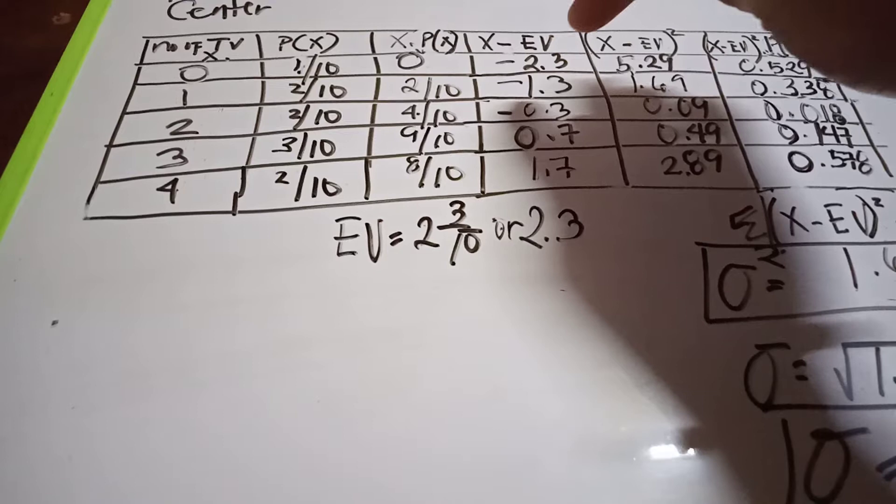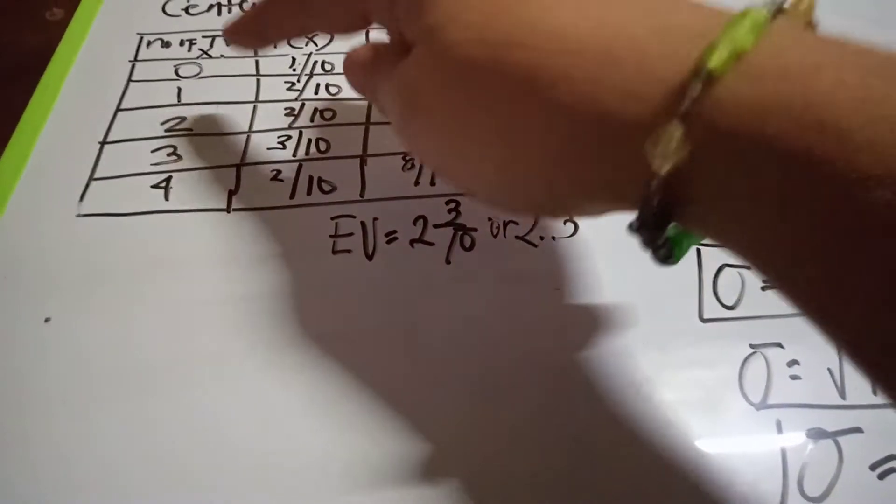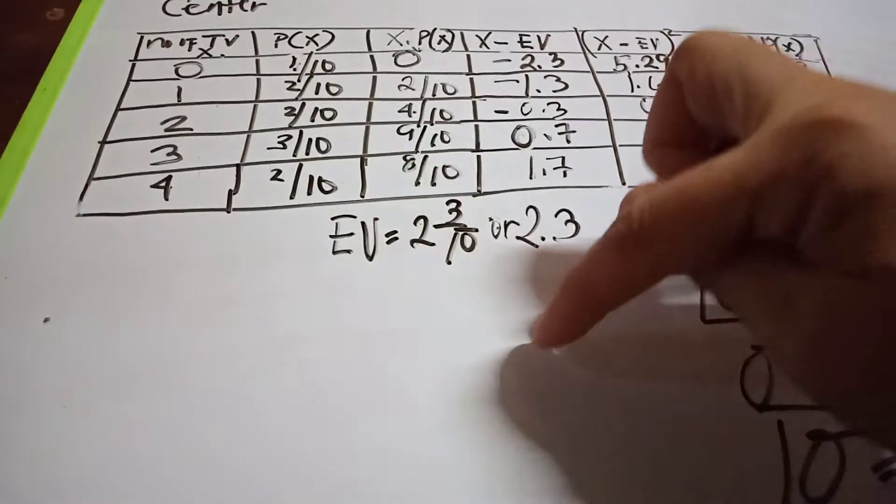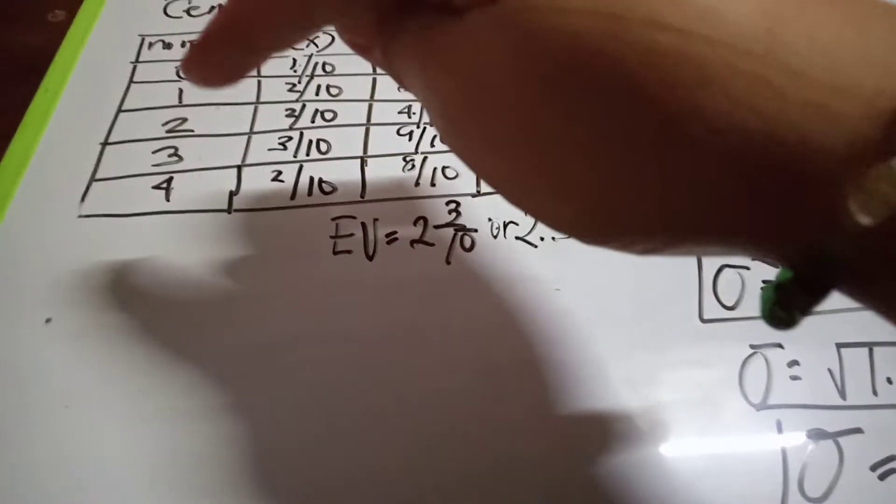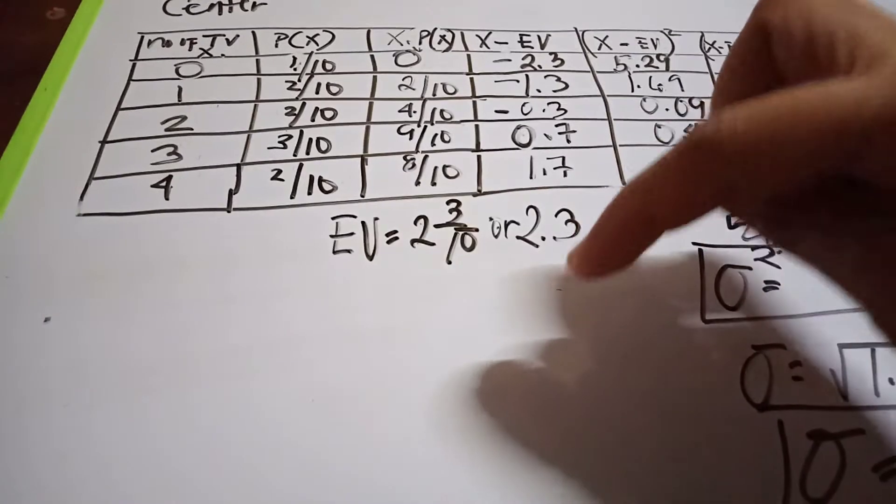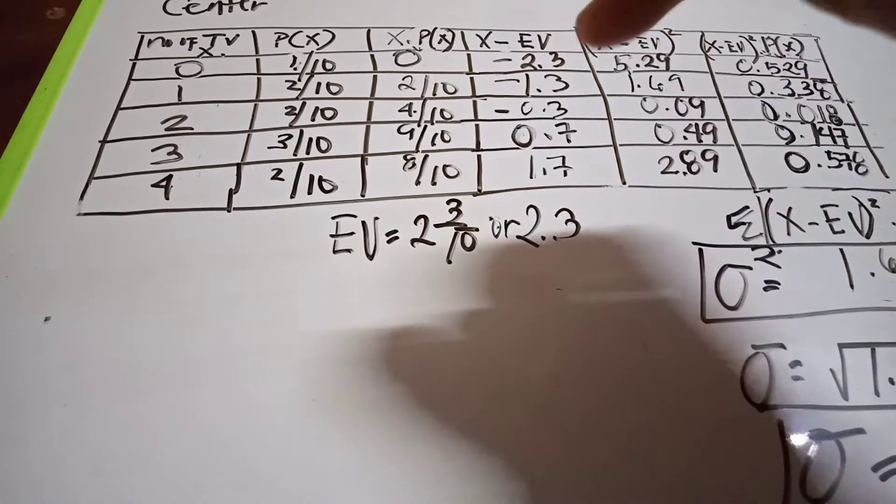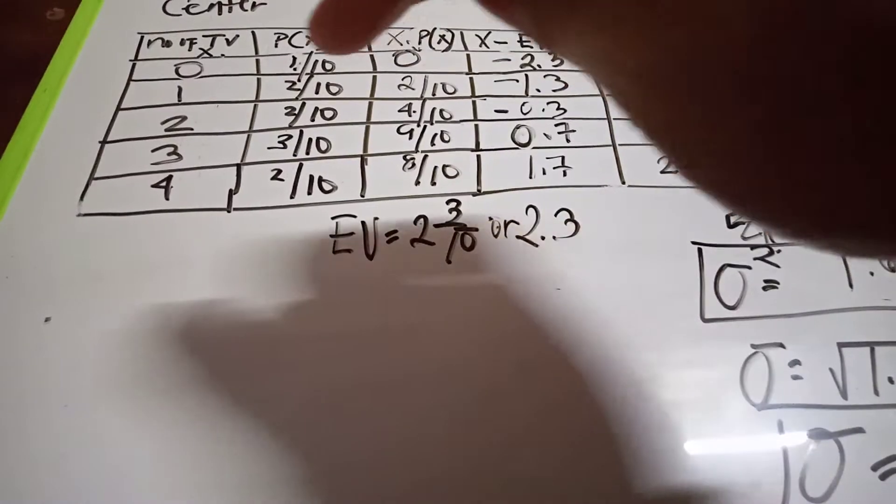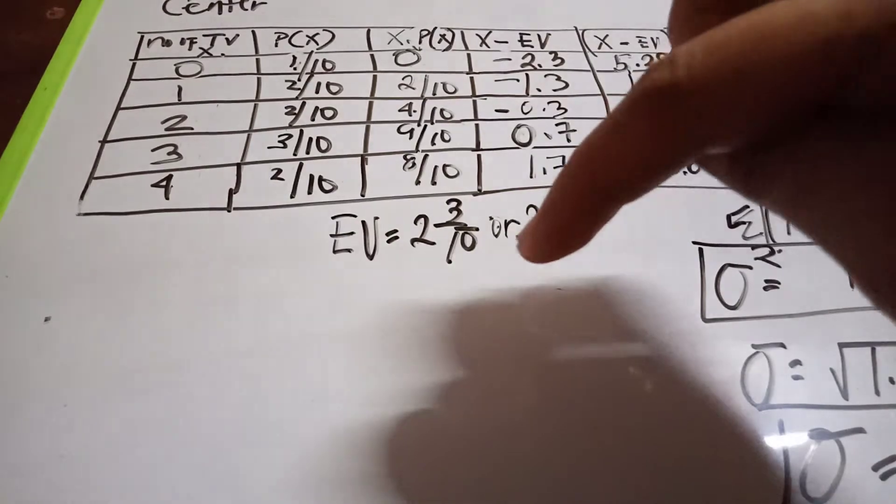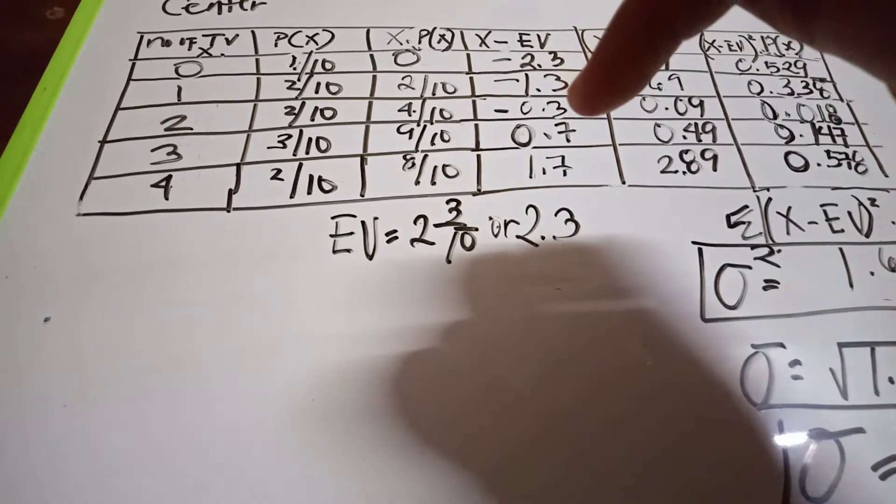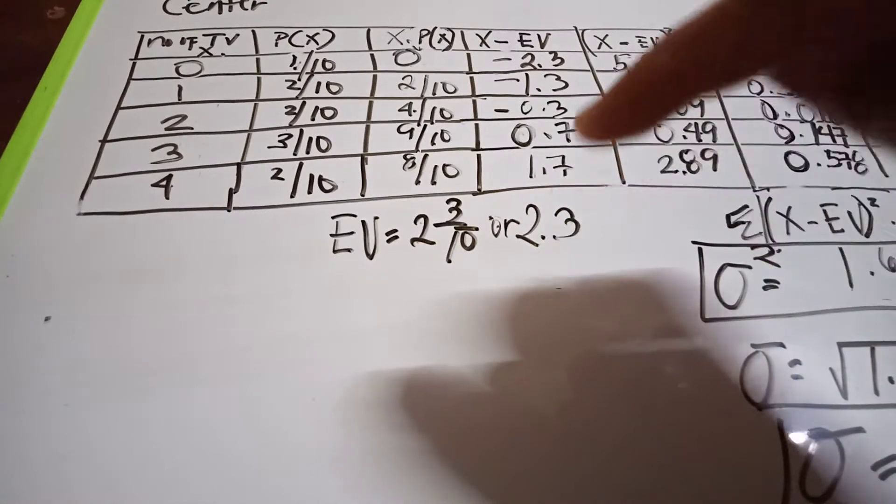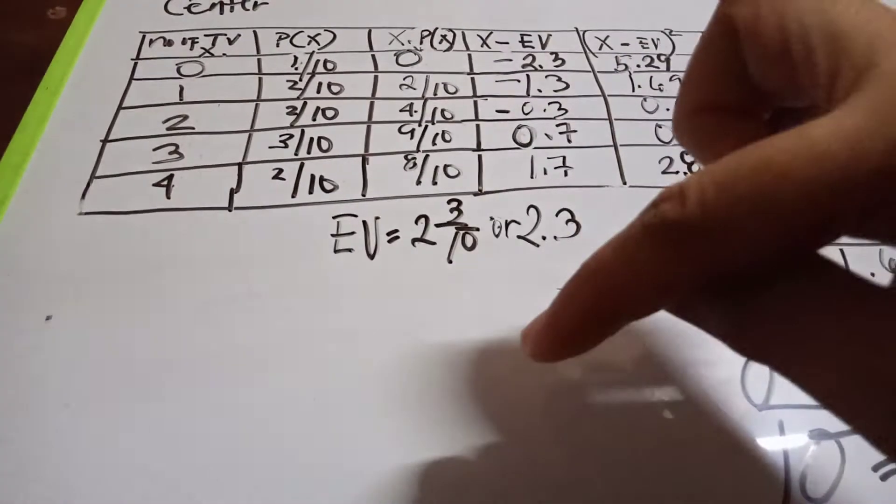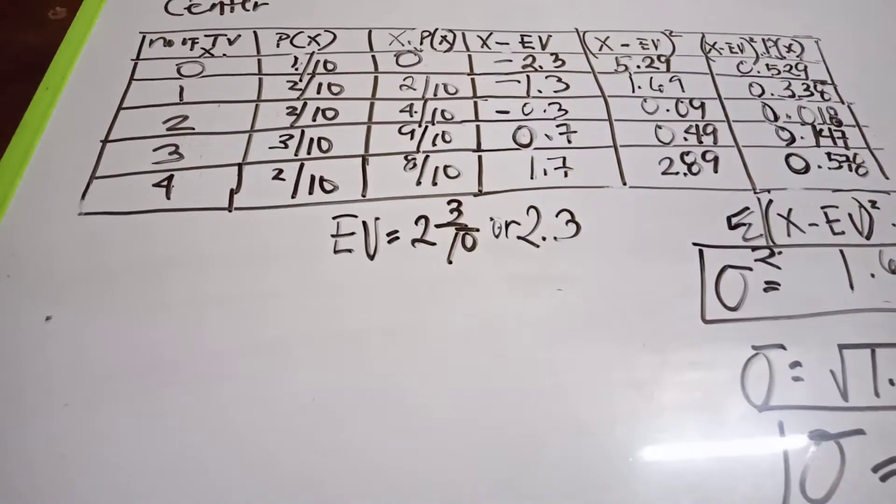For x minus the expected value: zero minus 2.3 equals negative 2.3, one minus 2.3 equals negative 1.3, two minus 2.3 equals negative 0.3, three minus 2.3 equals 0.7, and four minus 2.3 equals 1.7.